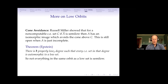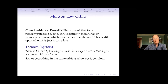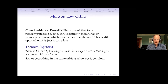Russell Miller showed that if you have a non-computable RE set C and A-complement is semi-low, then A has an isomorphic image that avoids the cone above C — cone avoidance. It's still open whether, if you just give an incomplete set C, there's something in the orbit of A which avoids the cone above C. This is a classic result in computability theory and it's completely open if you can do this when A is incomplete.